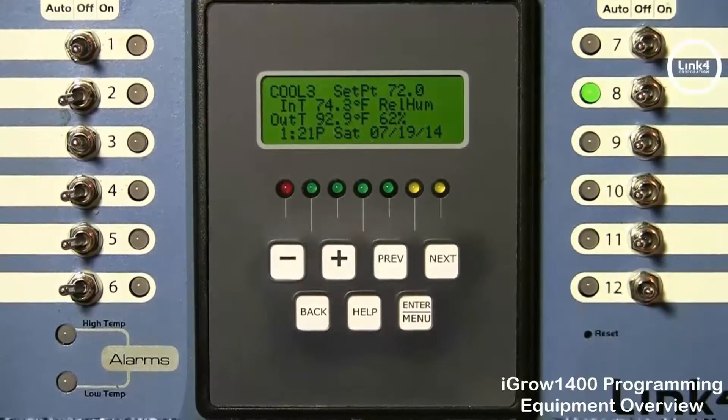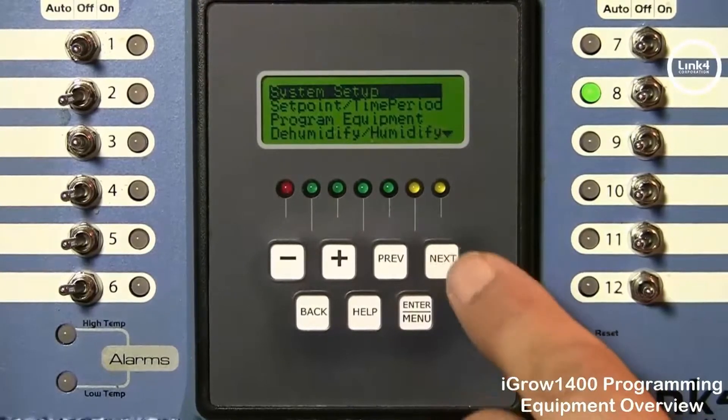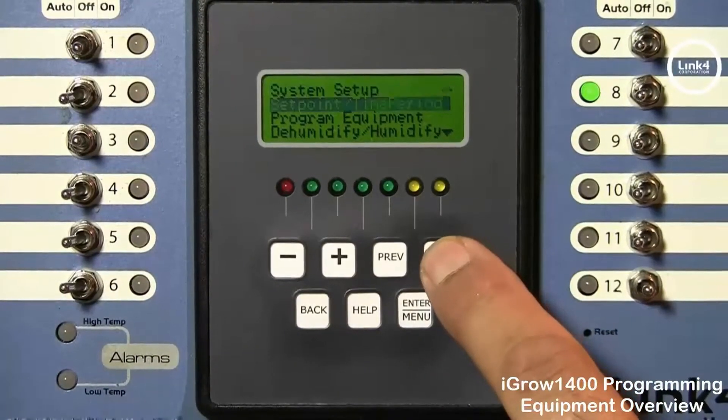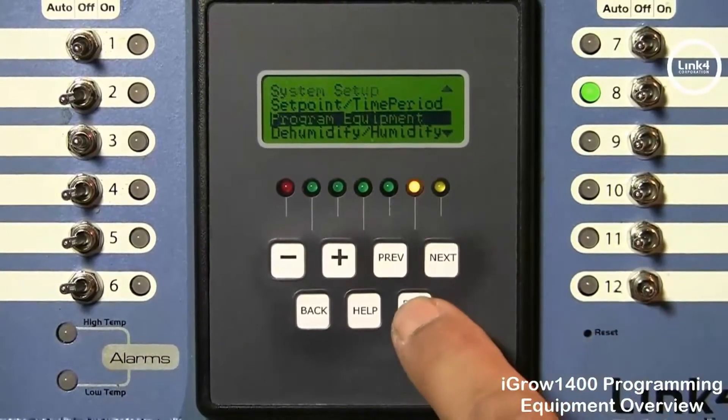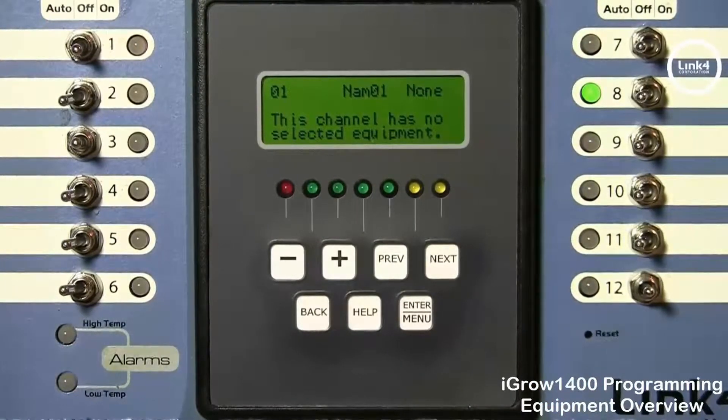So the first thing you're going to do is hit enter menu and then you're going to scroll down by hitting next to get to program equipment and this will display the program equipment screen.